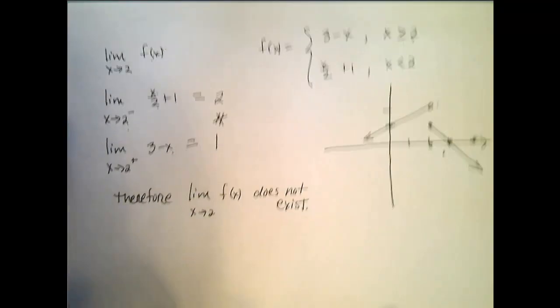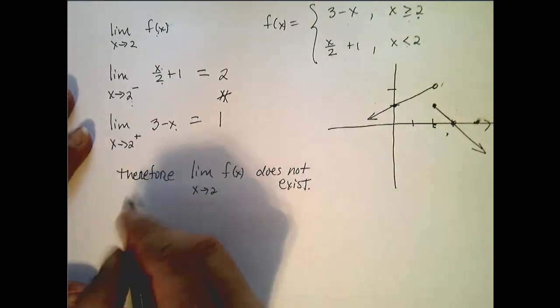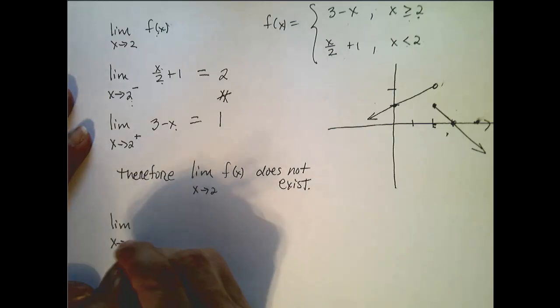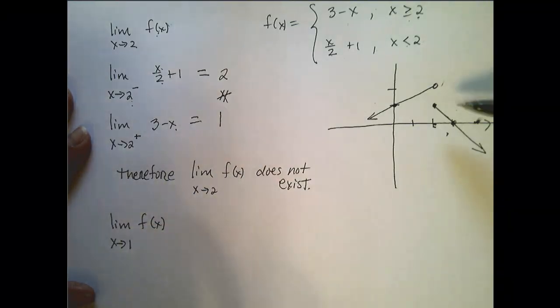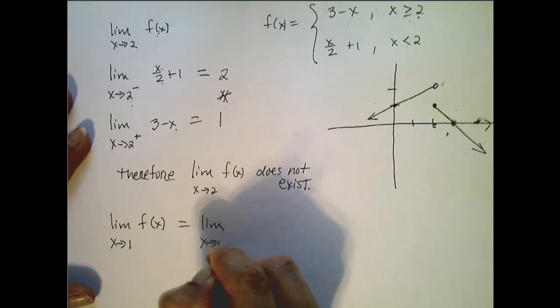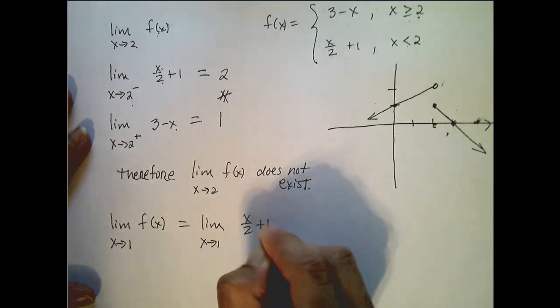Now what if I instead asked you this question: what is the limit as x approaches 1 of f(x)? Well, although this is a piecewise defined function, near 1—so to the left and the right of 1—this function is defined as x over 2 plus 1.